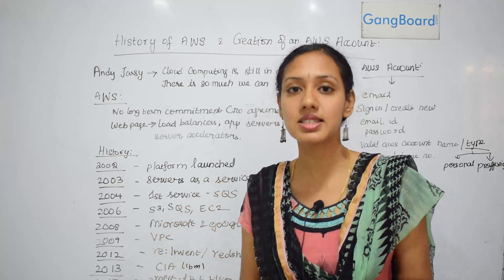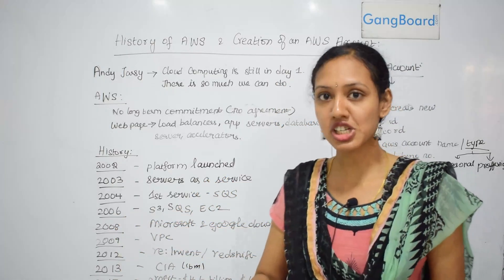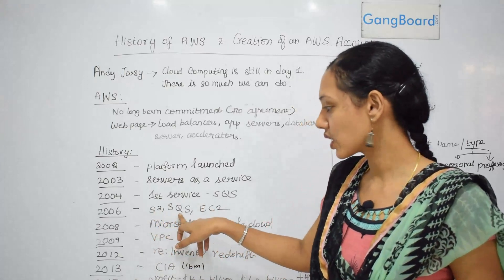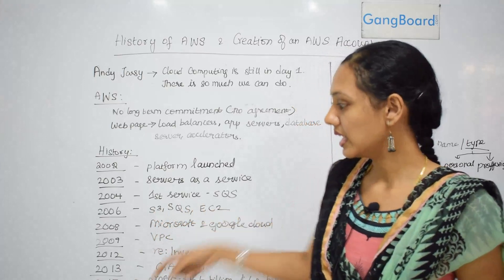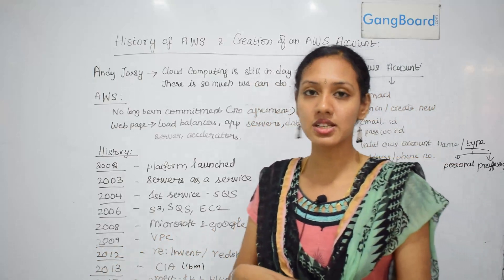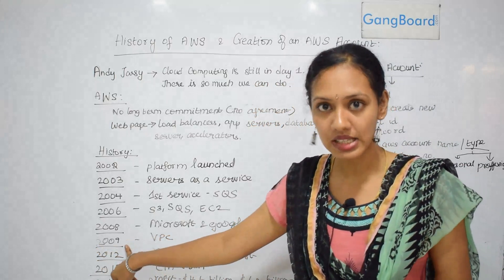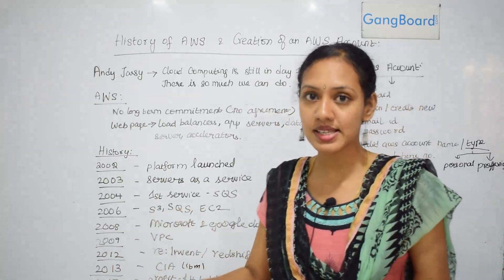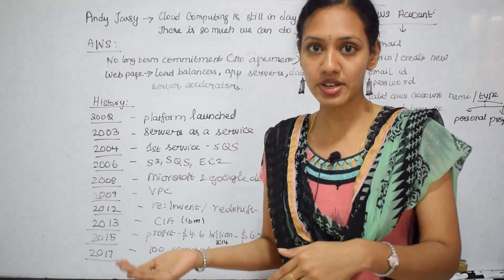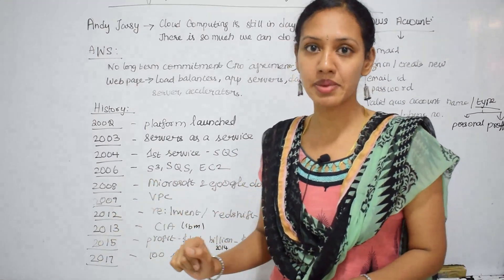SQS stands for Simple Queue Service. Then in 2006, AWS was officially relaunched with three main services: S3 (Simple Storage Service), SQS (Simple Queue Service), and EC2. In 2008, competitors Microsoft and Google also entered the cloud, increasing competition. In 2009, VPC — Virtual Private Cloud — was introduced, giving customers a private partition of AWS data centers. This was one of the major breakthroughs of AWS.